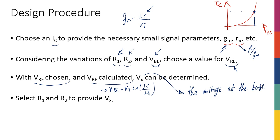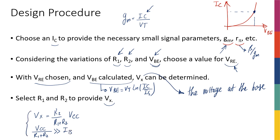At the end, I'm going to select R1 and R2 to provide VX. I know that VX equals R2 over (R1 + R2) times VCC. So I choose R1 and R2 values to give me the VX I want. At the same time, I have to make sure that VCC divided by (R1 + R2) is much bigger than the base current IB — that's how I ensure the base current is negligible and that the biasing is beta-independent. The values of R1 and R2 come out of this system of equations.